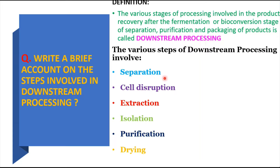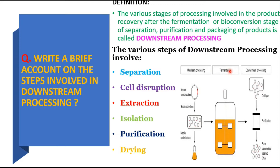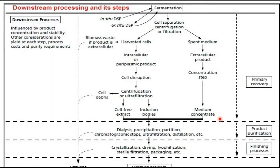Downstream processing involves several steps: separation, cell disruption, extraction, isolation, purification, and drying. The fermentation process — conversion of substrates into products — is referred to as upstream processing. Everything that occurs after the completion of fermentation, to recover the product, is downstream processing, abbreviated in some books as DP or DSP.